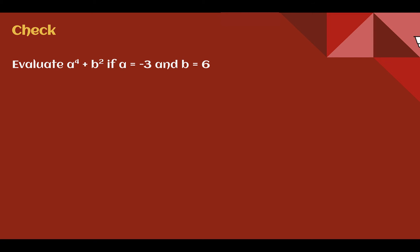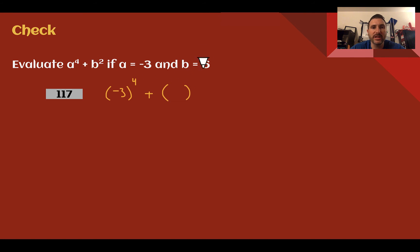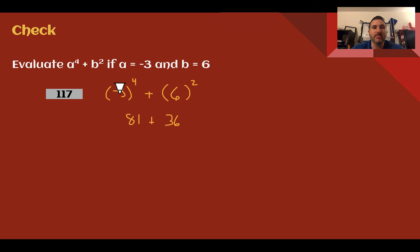Check your understanding: Evaluate a to the 4th plus b squared if a is negative 3 and b is 6. Pause the video now and complete the check. You should have got 117. Plugging in: negative 3 to the 4th power, plus 6 to the 2nd power. 6 times 6 is 36. For negative 3 to the 4th: 3 times 3 is 9, times 3 is 27, times 3 is 81. Negative times negative makes it positive, times negative makes it negative, times negative again makes it positive — so positive 81. 81 plus 36 gives us 117.